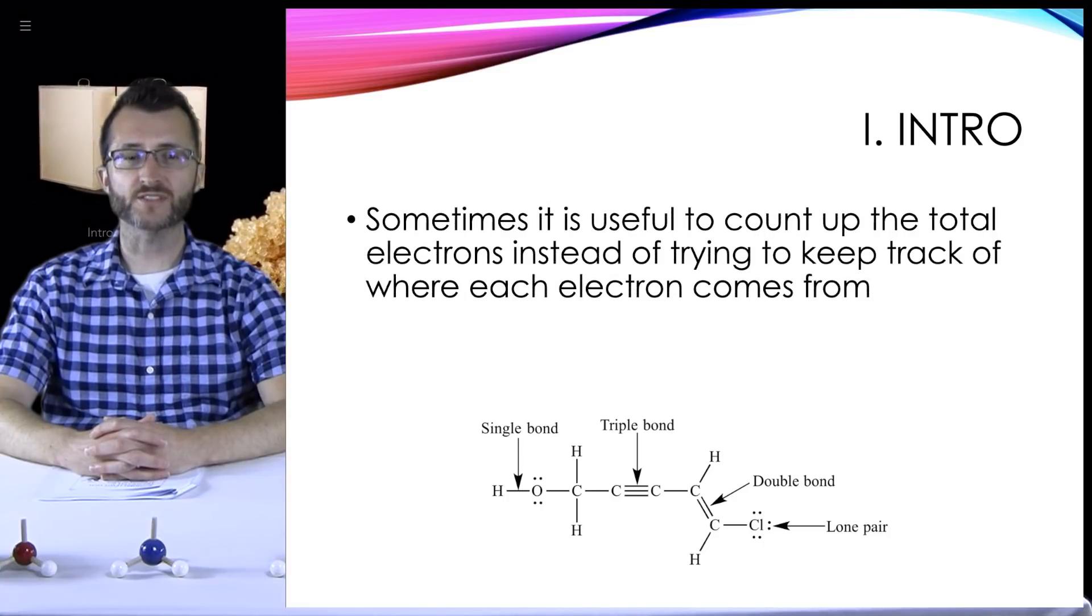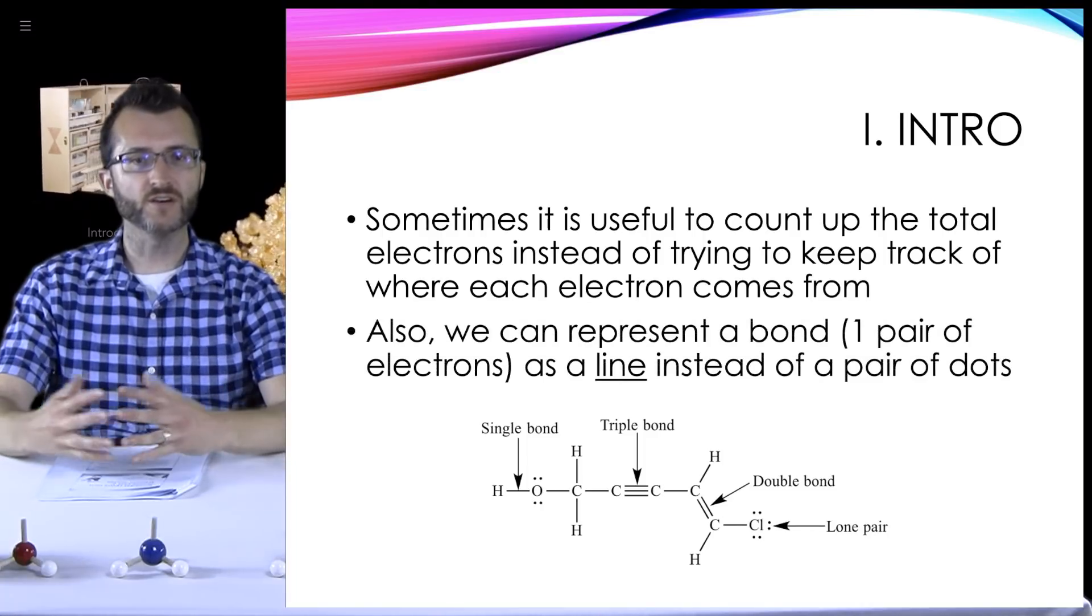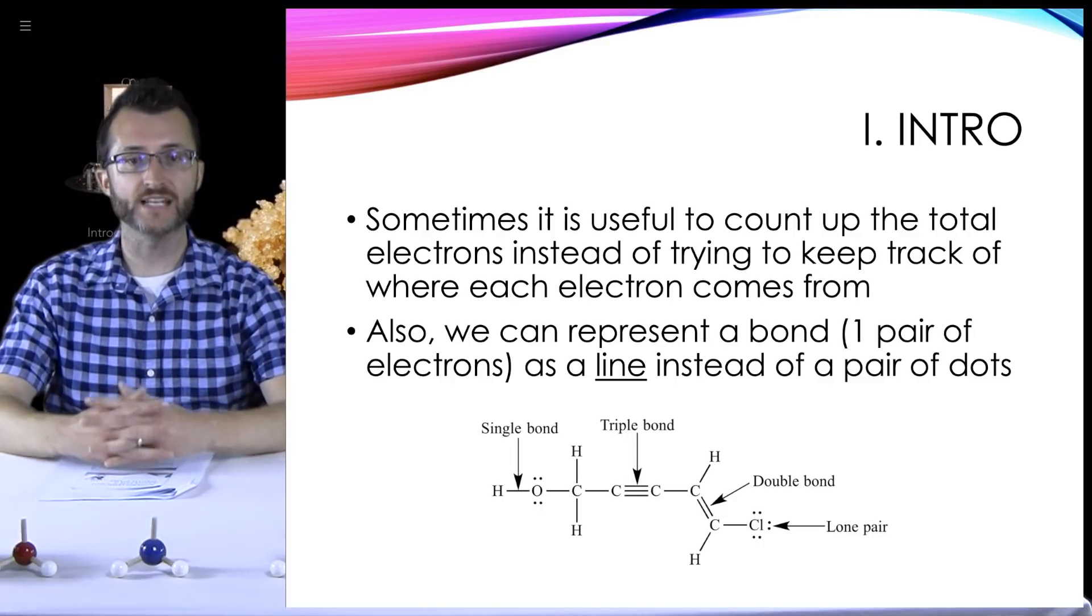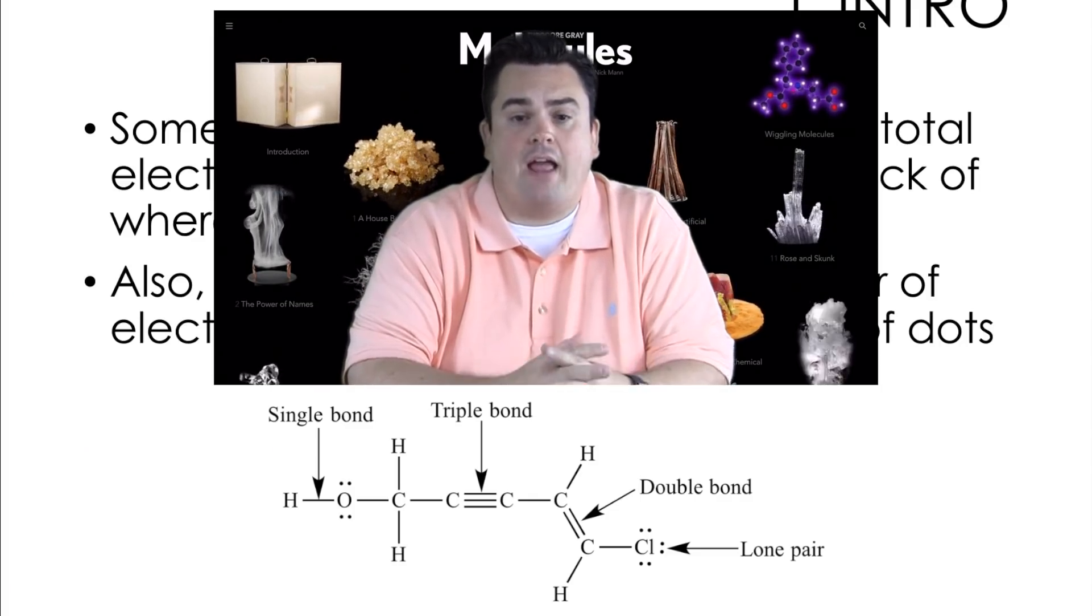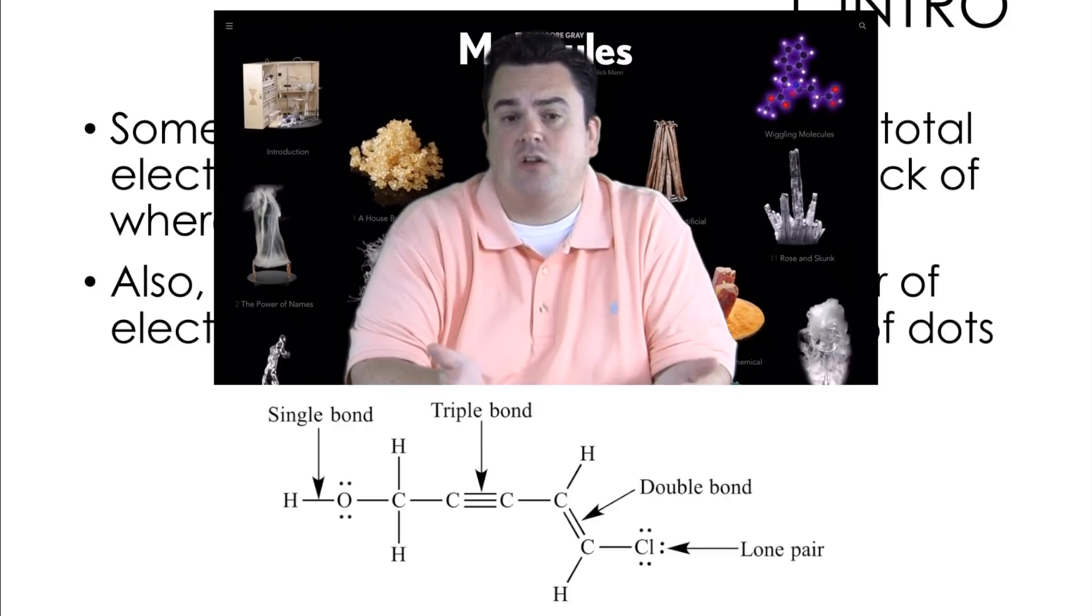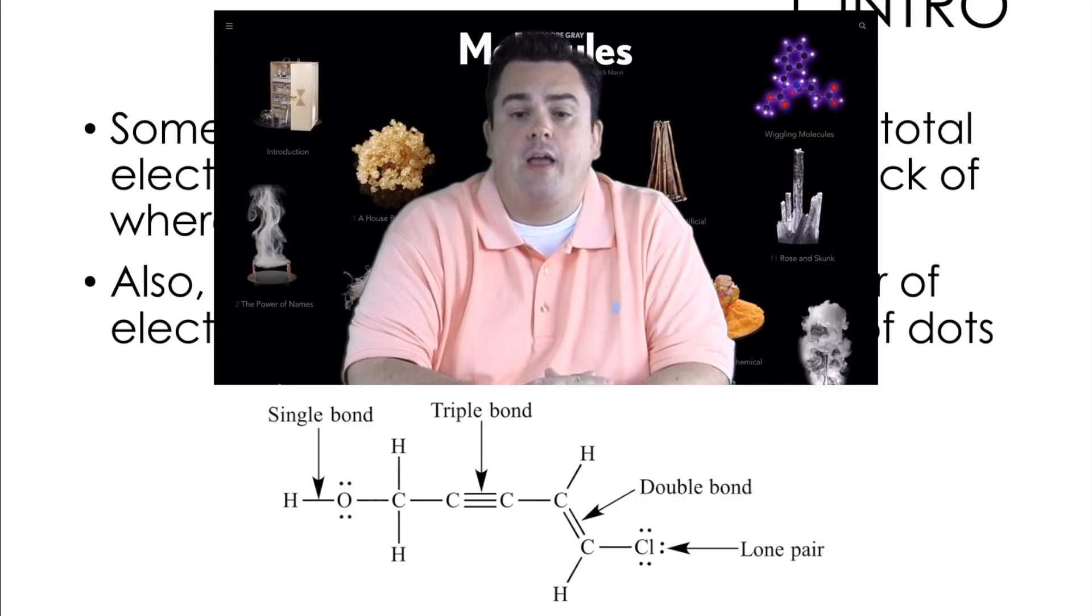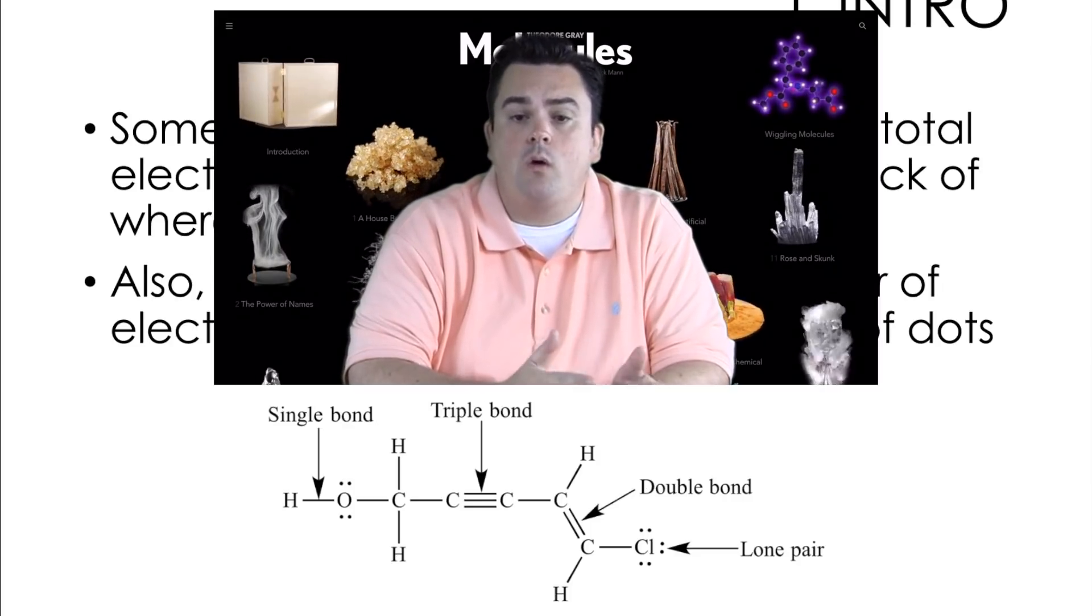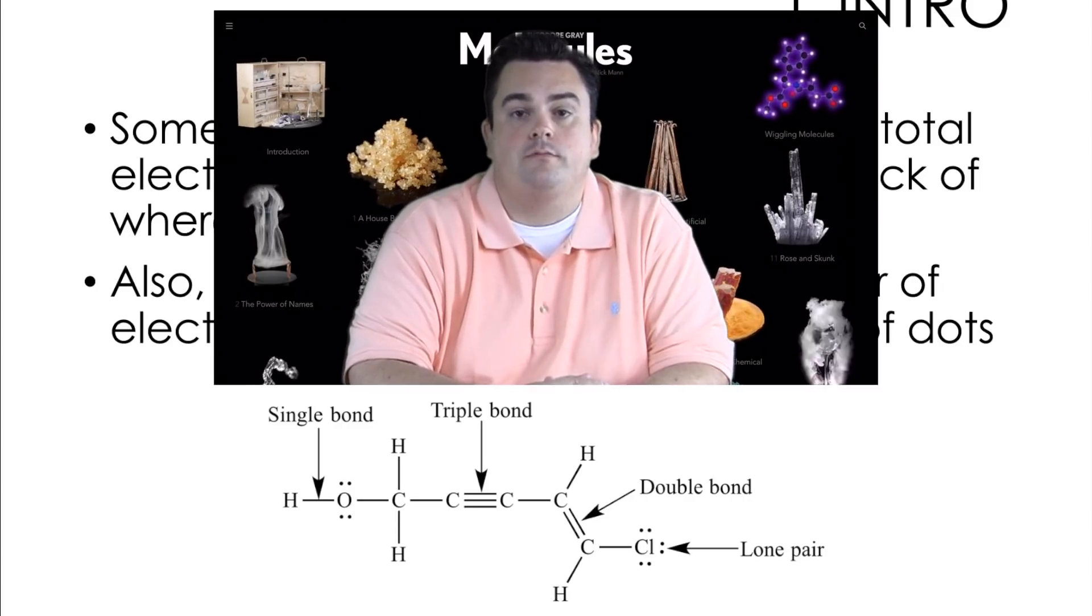Sometimes it is useful to count off the total electrons instead of trying to keep track of where each electron comes from. Also, we can represent a bond, which is one pair of electrons, as a line instead of a pair of dots. So in our diagram we've selected a molecule that has single, double, and triple bonds. If you take a look at anywhere there is a single dash, that is a single bond. In the middle you can see three dashed lines, that's our triple bond. And over to the right you can see our double bond represented by two dashes. Now the lone pair of electrons, the dots that are not bonded, are still going to be shown.